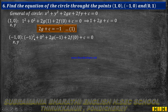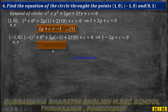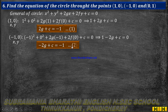Since 0 squared is 0 and 2f into 0 is 0, we get: 1 minus 2g plus c equal to 0, which gives minus 2g plus c equal to minus 1. This is equation number 2.